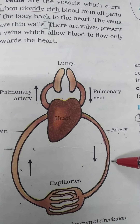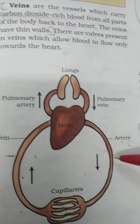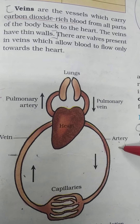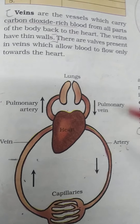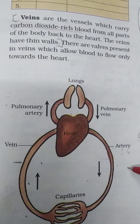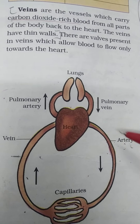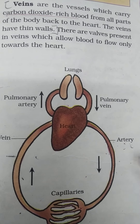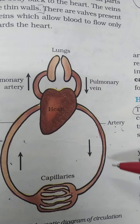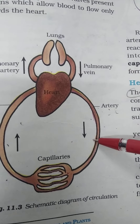Next are arteries. Arteries are blood vessels that carry oxygen-rich blood. Veins carry deoxygenated blood, and arteries carry oxygenated blood from the heart to all parts of the body. Arteries have thick elastic walls and are placed deeper under our skin.